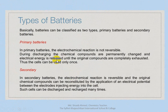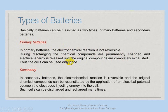There are two types of batteries: primary batteries and secondary batteries. In primary batteries, the electrochemical reactions are not reversible. All chemical compounds are permanently changed and electrical energy is released until the original compounds are completely used up. Thus, a primary cell can be used only once.